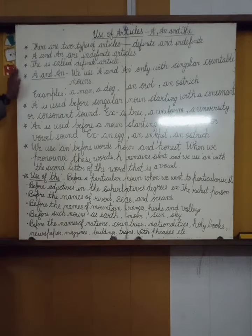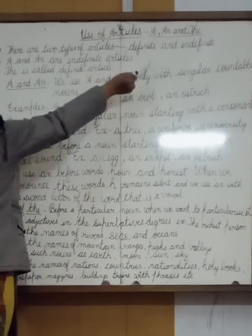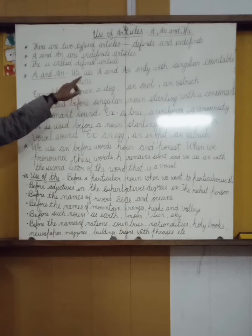A, An and The. There are two types of articles, definite and indefinite. A and An are indefinite articles. The is called definite article.